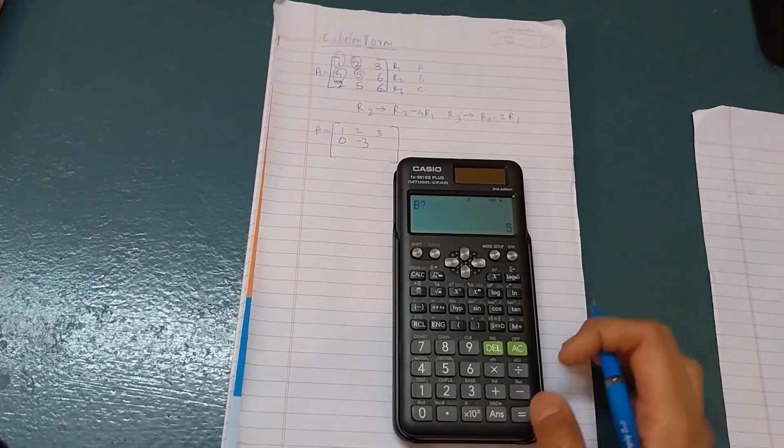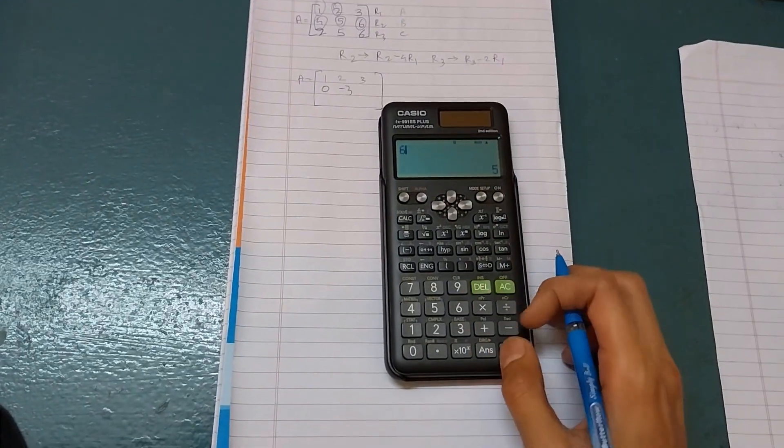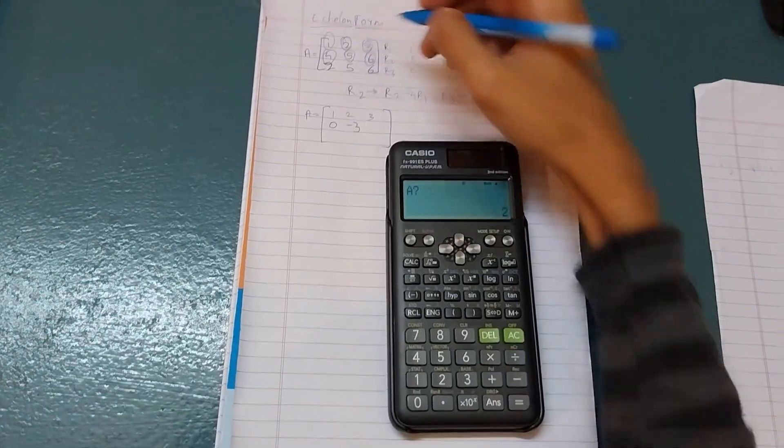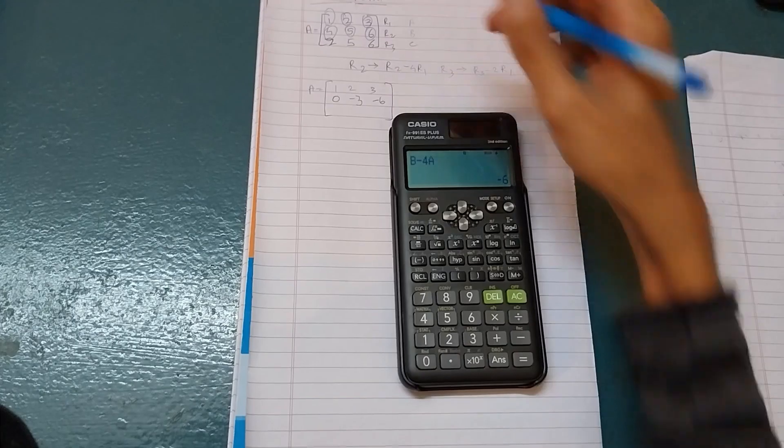Then press equals. Then B value is 6, so write it as 6. A value is 3, so write it as 3. Then it will be minus 6.